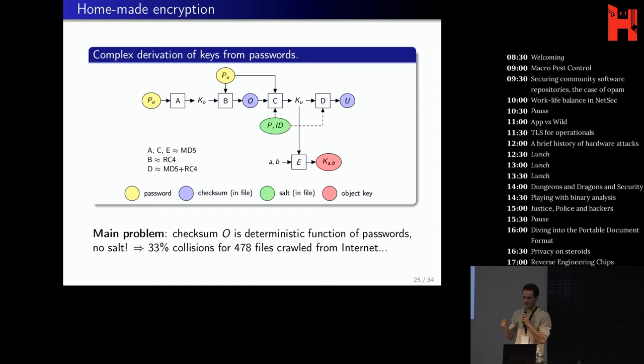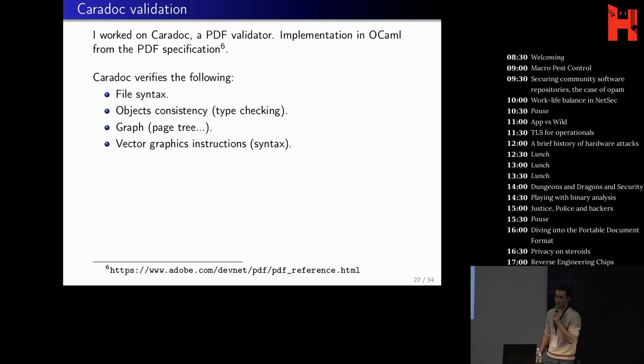So there are, in yellow, the two passwords. And then in blue, there are the checksums that you can see in the file. In green, it's a randomization that you can see in the file as well. And the main problem is that if you look closely, the owner checksum in the file is just a deterministic function of the passwords, so based on MD5 and RC4. So basically, if you have the same password as someone else, you will obtain the same checksum. And we did some campaign of PDF crawling. And for about 500 files crawled from the internet, a third of them had a collision in the checksum O. So yeah, there could be some cracking software to recover the password from this checksum. So I don't advise you to use PDF encryption if you really care about your data. Use something stronger.